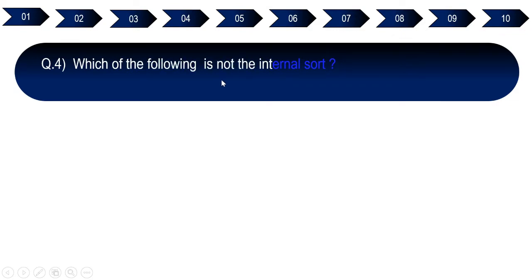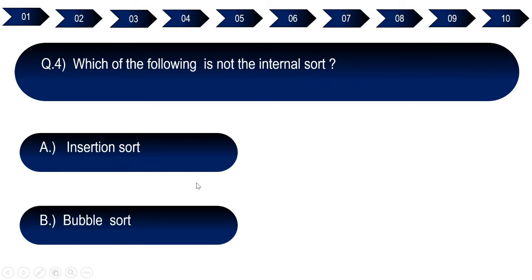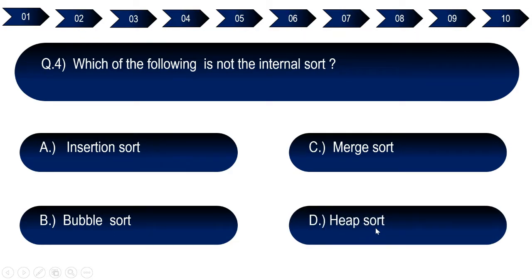Question number four: Which of the following is NOT an internal sort? Option A: insertion sort. Option B: bubble sort. Option C: merge sort. Option D: heap sort. The right answer for question number four is option C, merge sort.